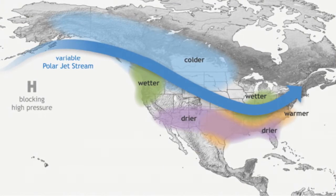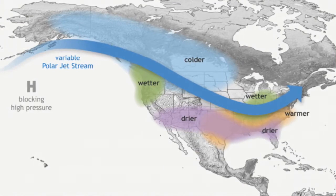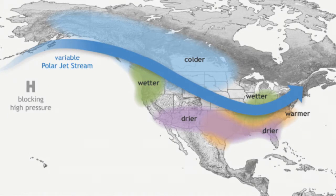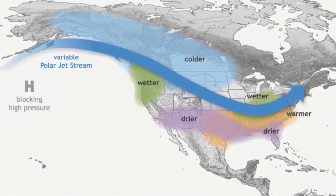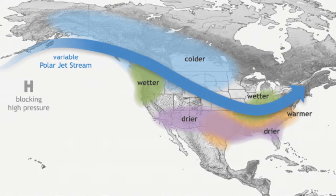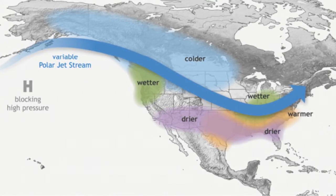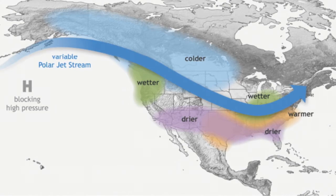Jet streams also affect the weather of the world. In the United States, the polar jet stream runs from the northwest and travels east. This carries weather systems with it. When weather systems meet this jet stream, they can be blown to different parts of the country depending on how strong they are.